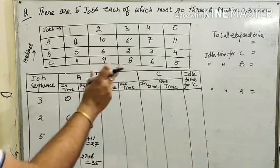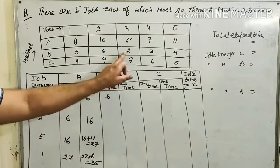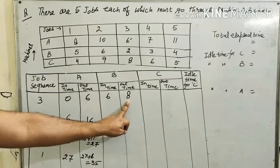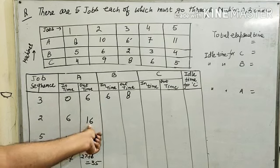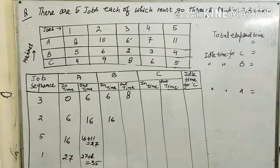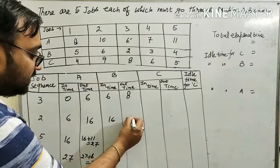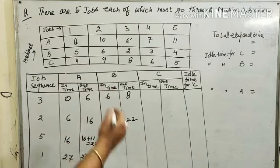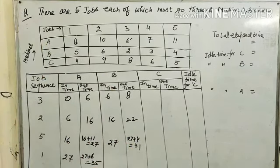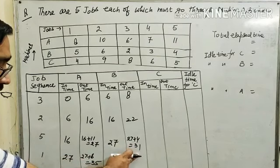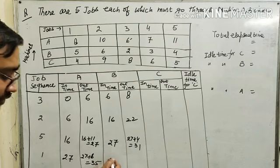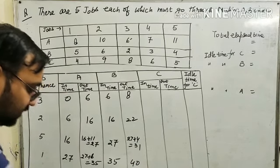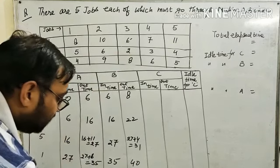For machine B, it starts at 6 hours and takes 2 hours, completing at 8. But the next job is not ready until the 16th hour, so B is idle and starts after 16, taking 6 hours: 16 plus 6 equals 22. The same idle condition exists; it starts from the 27th hour, taking 4 hours: 27 plus 4 equals 31. Machine B completes at 31 but next job is not ready until the 35th hour. It starts at 35, taking 5 hours: 35 plus 5 equals 40. Then it starts at 42 and takes 3 hours: 42 plus 3 equals 45. Total elapsed time for A and B is 45 hours.